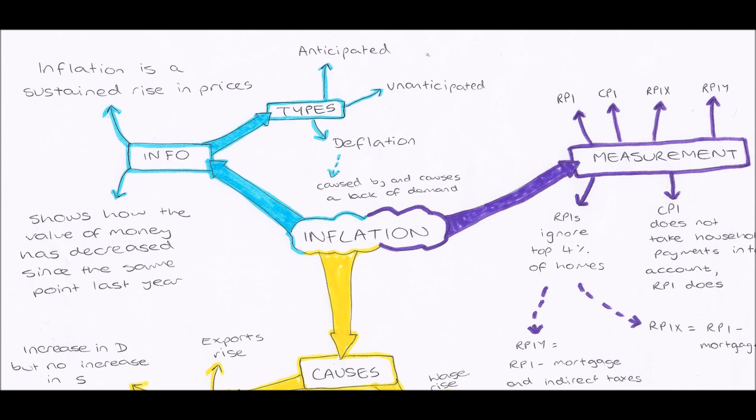Then now with my pound I can only buy four Freddos, so therefore the value of my pound has decreased. The value of my money has decreased because I can't buy as many Freddos with it. Its purchasing power has decreased.